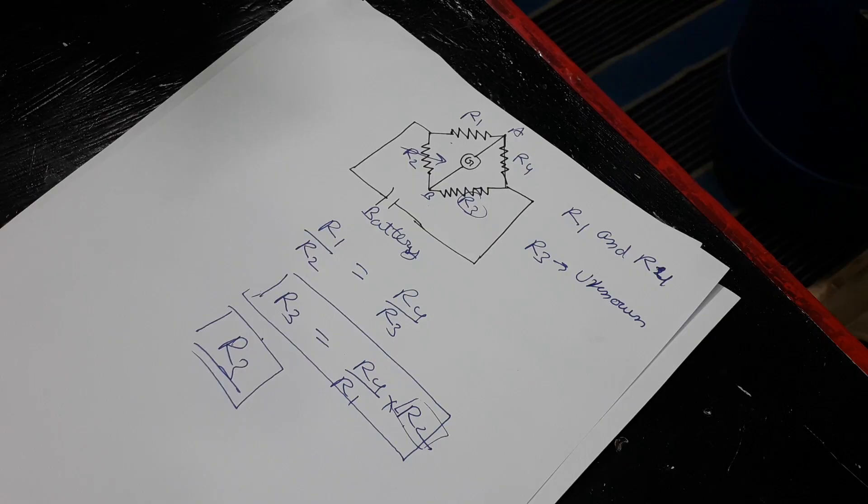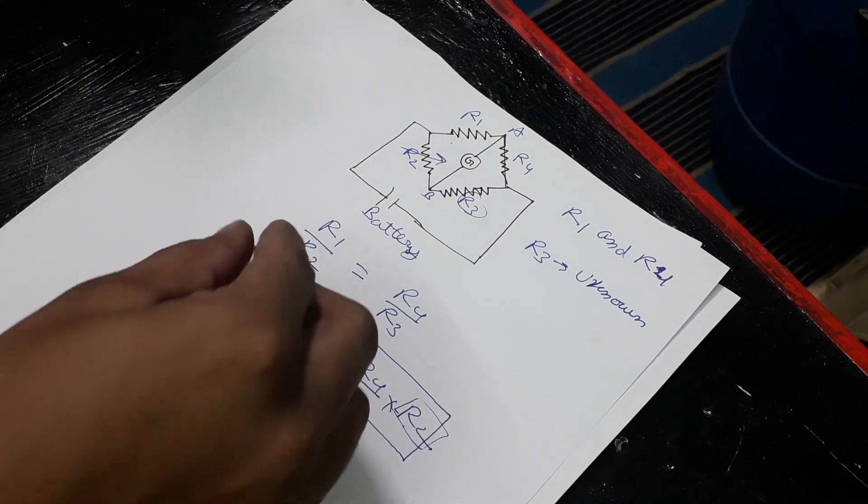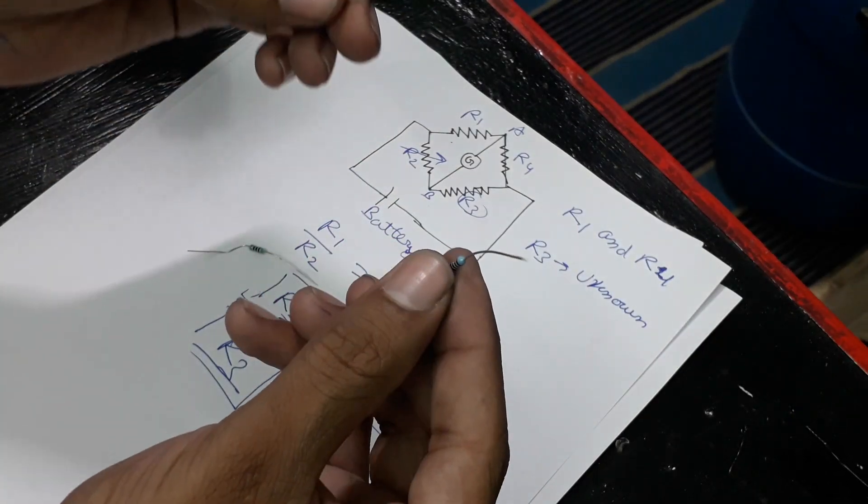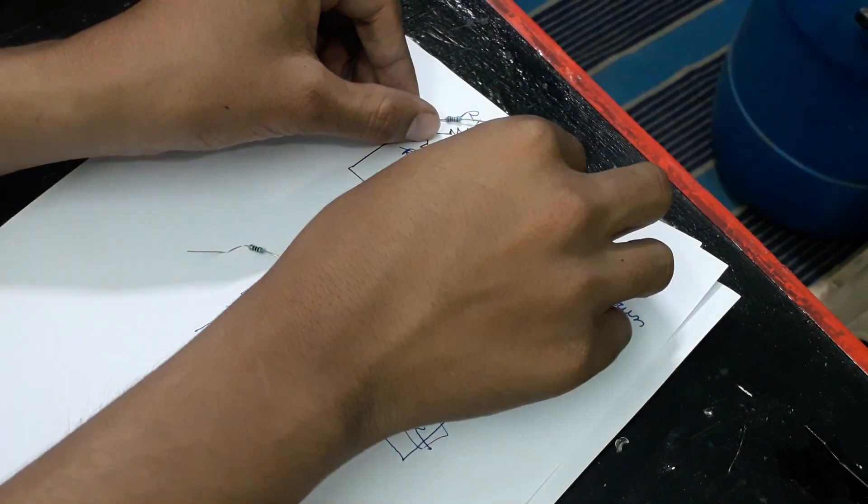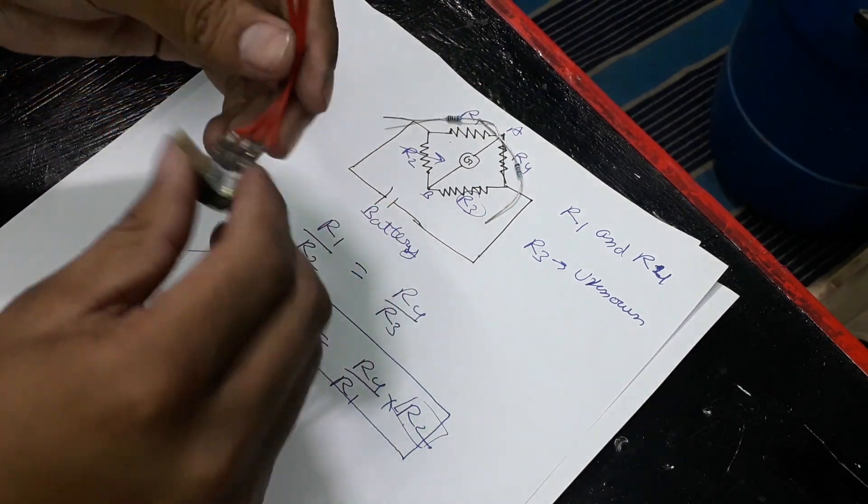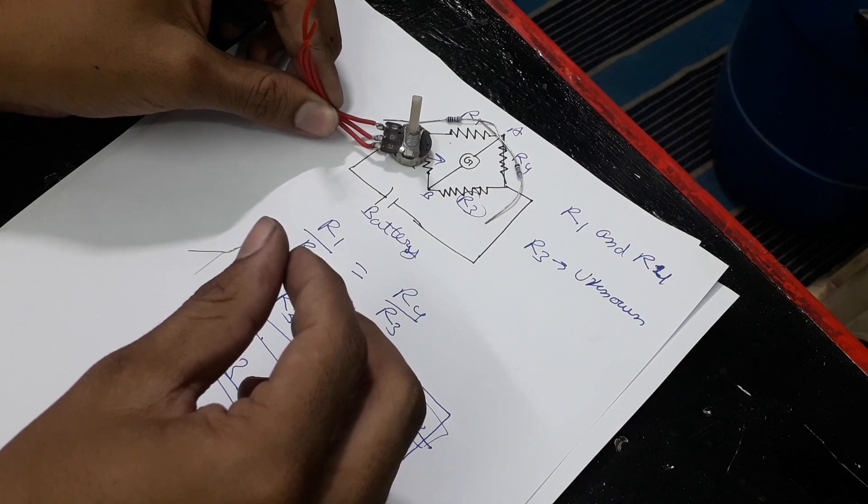Now let's take an example and find the value of this resistance with the help of 2 known resistances, R1 and R4, which are both 10k ohms. And a variable resistance we will use in place of R2.